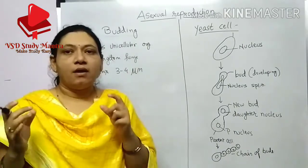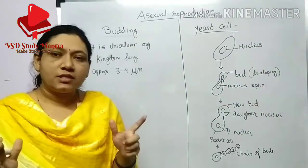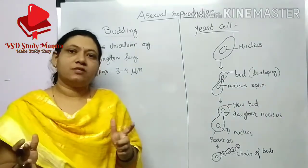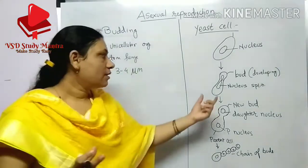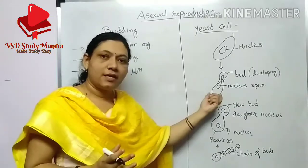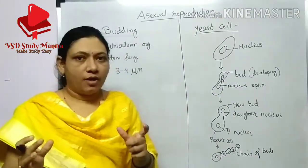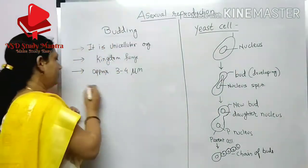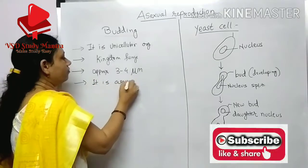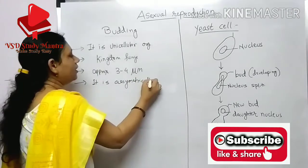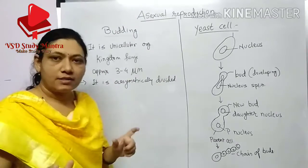Yeast reproduces asexually and the division is asymmetrical — meaning it is not symmetric like binary fission. The parent cell is bigger and the bud formed is very small in size, so the division is asymmetrical.